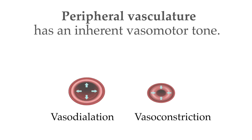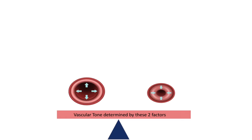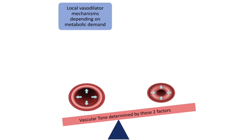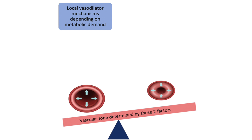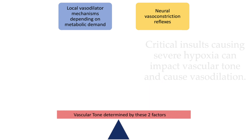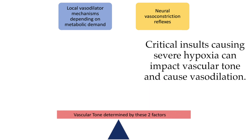Peripheral vasculature has an inherent vasomotor tone. This vascular tone represents the balance between local measures to secure adequate blood flow for metabolic demand and the neural vasoconstrictor reflexes that attempt to maintain arterial pressure. Critical insults can alter this balance.